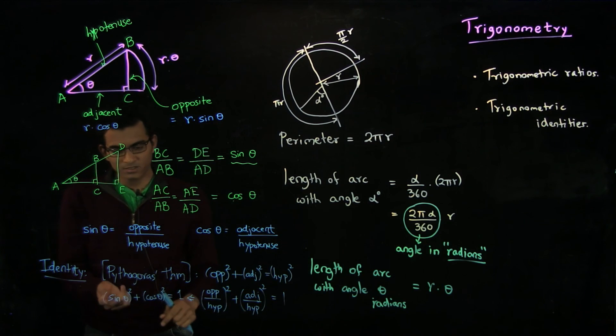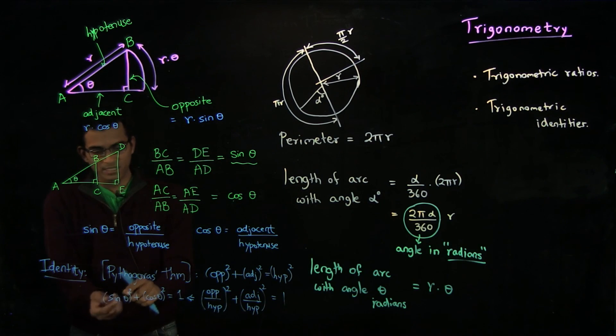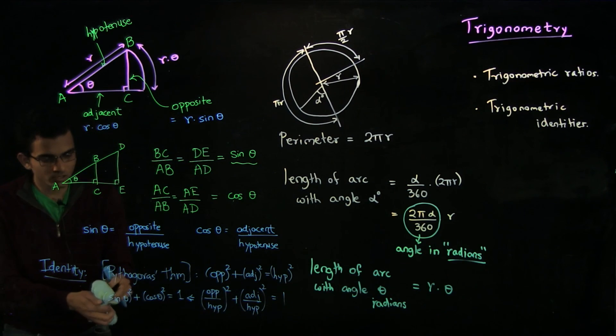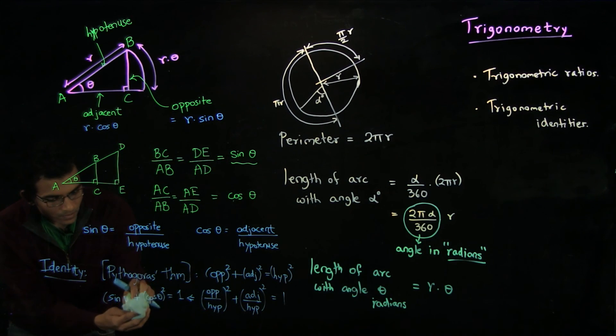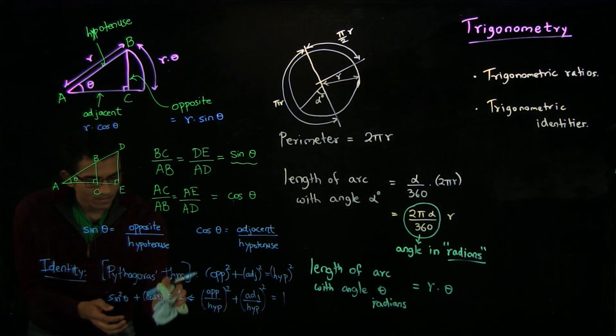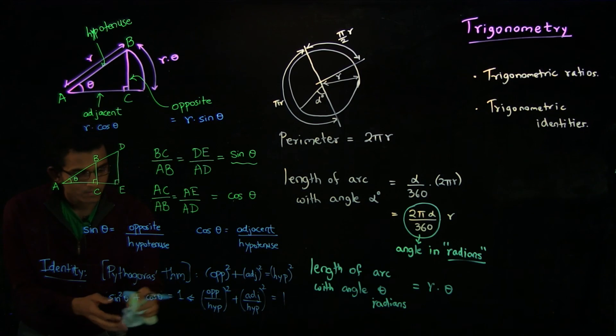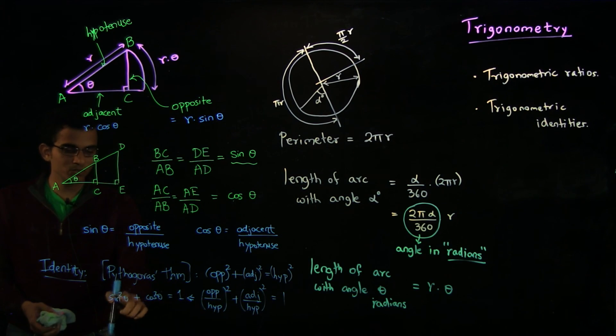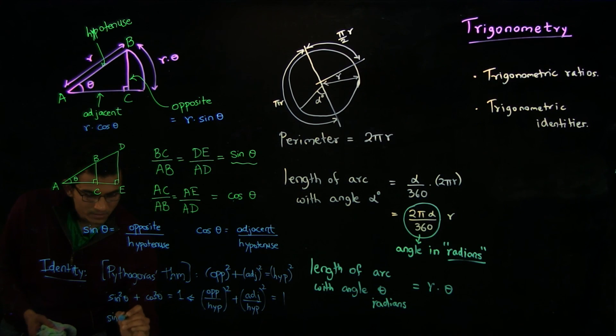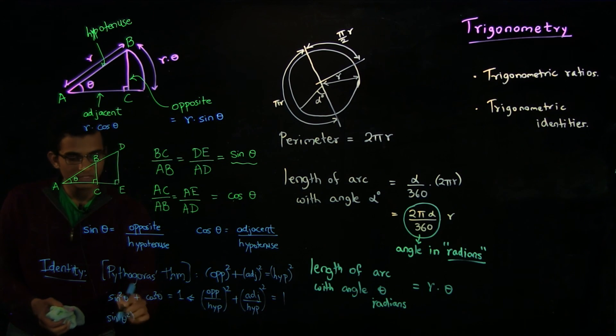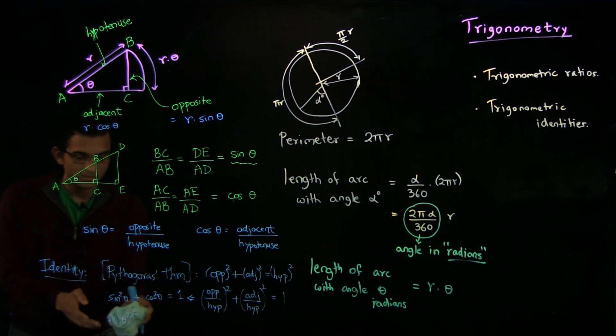Now, a usual convention to write sin theta squared is you do not want to write the brackets all the time. What you do is write it as sin²theta and cos²theta, so as to not confuse with, for example, sin(theta²). This would mean sin of theta squared, whereas the other is sin theta squared.